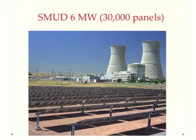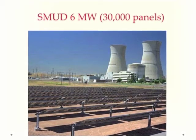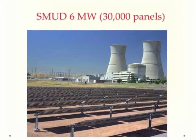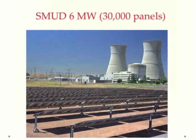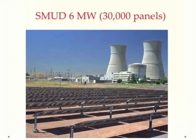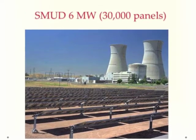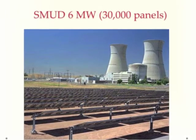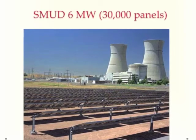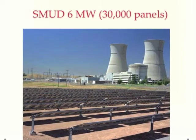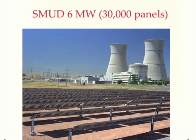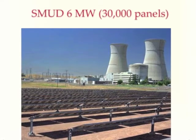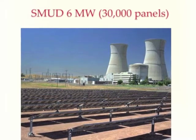A similar central power system is shown at the Sacramento Municipal Utility District generating station. Here, there are 30,000 panels made into a very big 6 megawatt array to generate electricity as part of the grid.